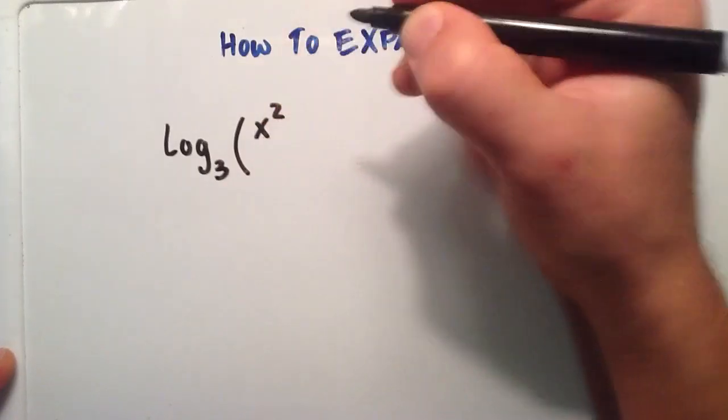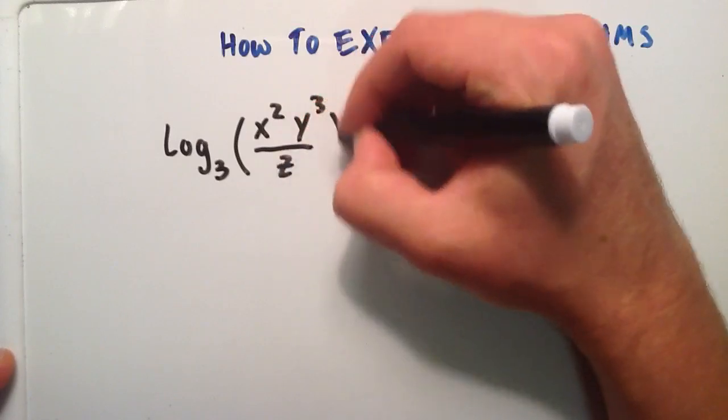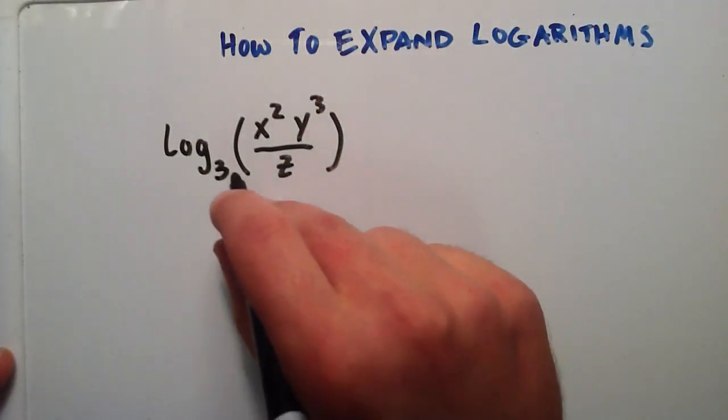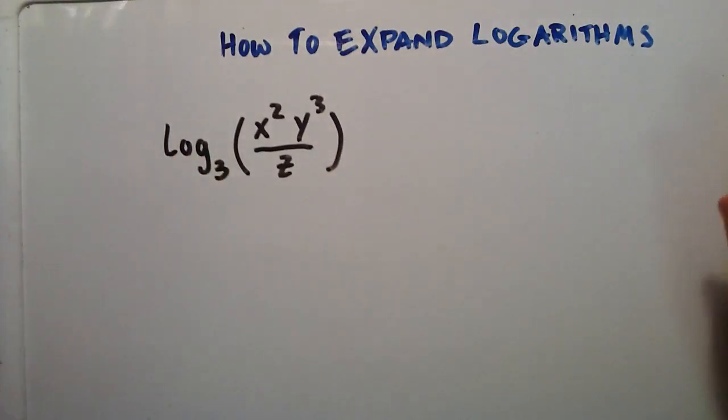So if we have log base 3 of x squared y to the third divided by z, and we want to use properties of logarithms to stretch out this statement, to make it basically a longer form, we can use the properties I've been talking about in my previous videos.